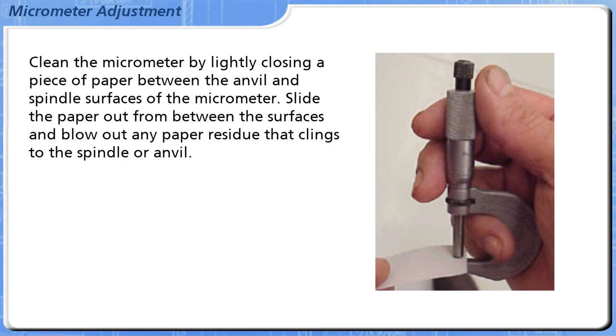Clean the micrometer by lightly closing a piece of paper between the anvil and spindle surfaces of the micrometer. Slide the paper out from between the surfaces and blow out any paper residue that clings to the spindle or anvil.